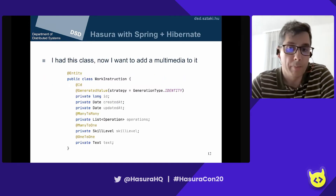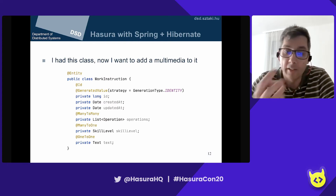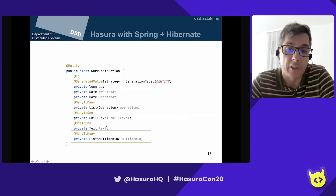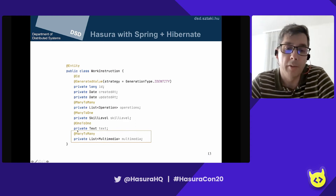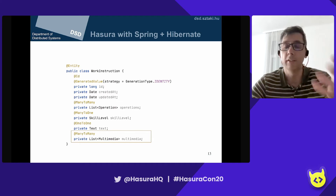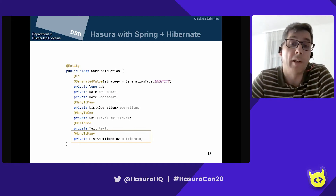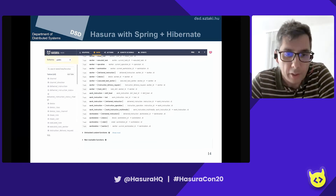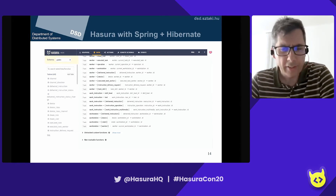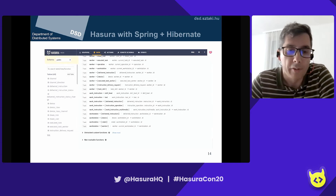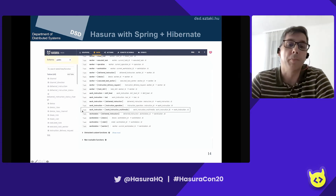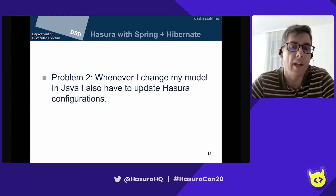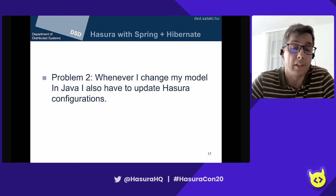As I progress developing my application, I often want to add new fields to my model. For example, besides textual information, I planned to add some multimedia — a list of multimedia mapped as a many-to-many association. I just add one line of code in Java and run my application; Hibernate takes care of adding the new fields and relationships. But then I have to go back to the Hasura console and after a lot of eyeball searching, figure out which new relationship to track. This is my second problem: whenever I change my model in Java, I also have to update the configuration in the Hasura console.